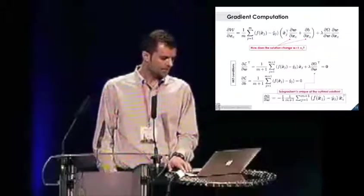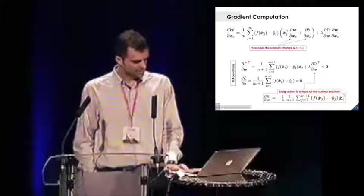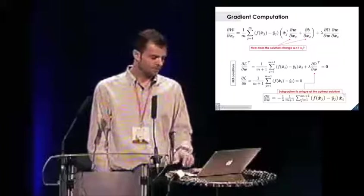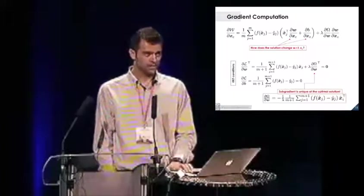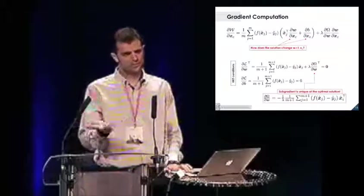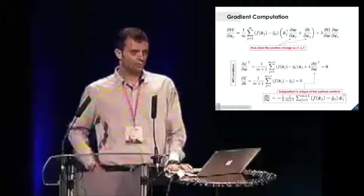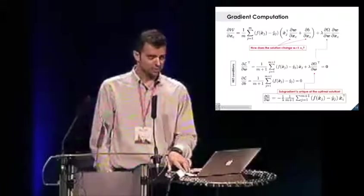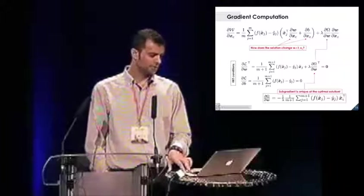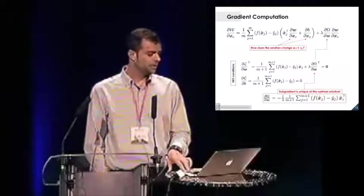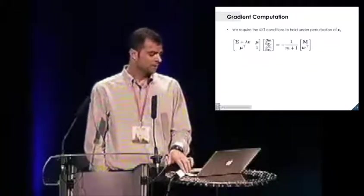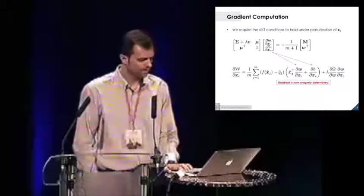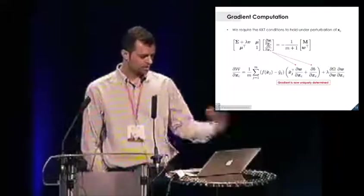So if we impose that, we have a first advantage, and it is that the subgradient of the regularization term, if you use the L1, is now uniquely determined, and so you can just plug it into the gradient expression. Instead of exploring many possibilities, you just have to focus on one search direction. What you can do also is to assume that these conditions remain intact, so you can differentiate the KKT with respect to the attack point. What you get is a simple linear system. If you solve that, now you know how the weight and the bias change while you move the attack point. So this completes the computation of the gradient.